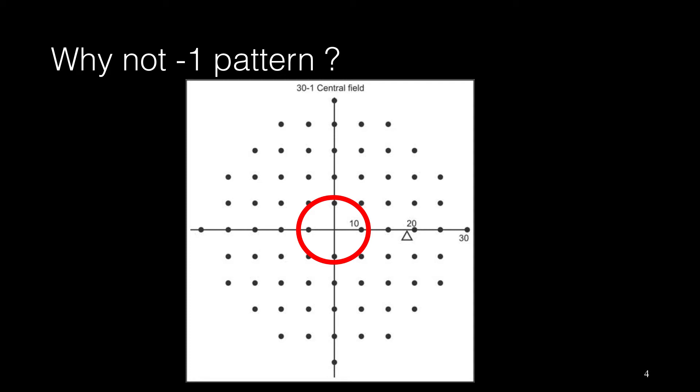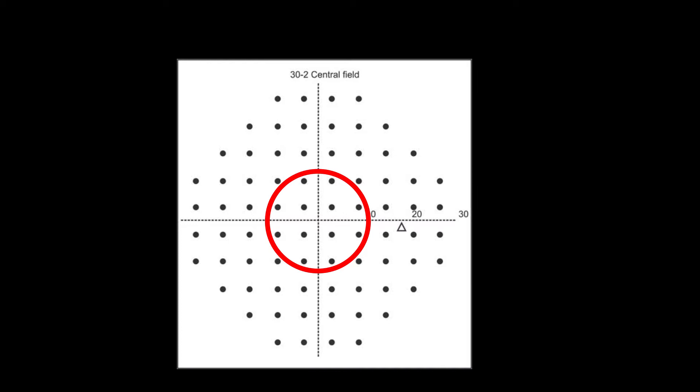We prefer to use dash-2. Why? Because if we choose point pattern 1, we check only four points at the central 10 degrees, while in point pattern 2, we check 12 points. In addition, with point pattern 1, patients with neurologic visual field defects would be able to see the points on horizontal and vertical lines with the seeing part of their own visual field.